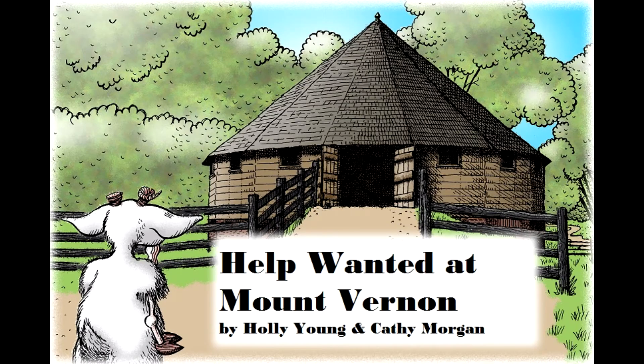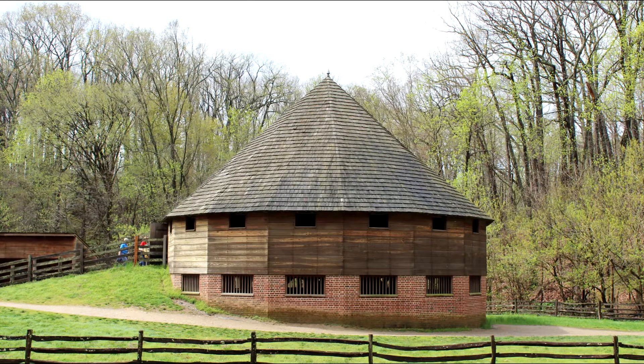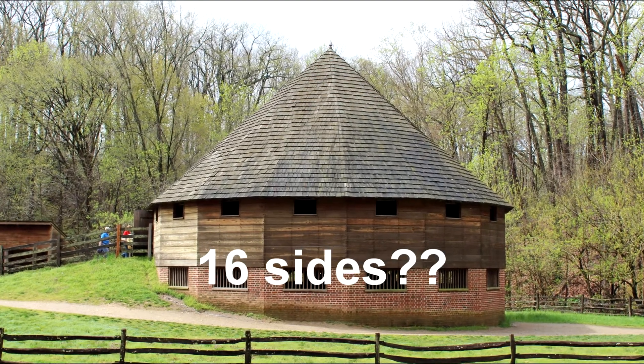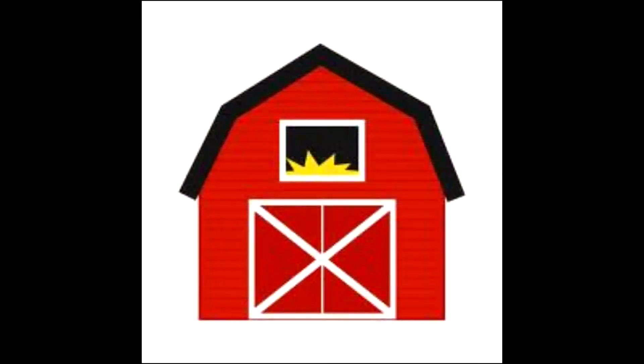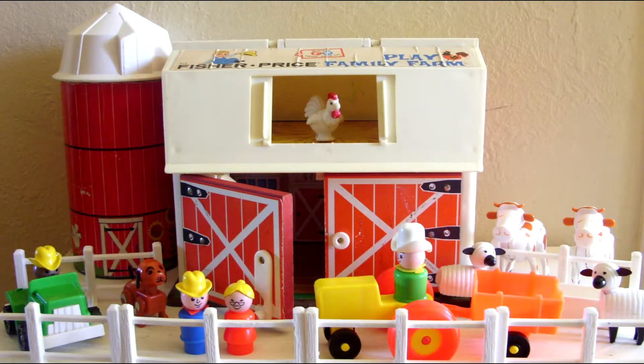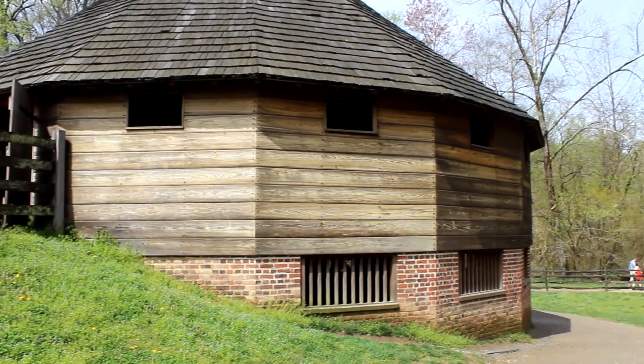In the book Help Wanted at Mount Vernon, Lloyd the fainting goat gets sent to work in Washington's 16-sided barn. 16-sided barn? Did I just hear that correctly? I thought all barns were a four-sided shape where the door opened and the moo sound happened. Or maybe that's only in the Fisher Price barn. I don't know. But George Washington had a 16-sided barn.